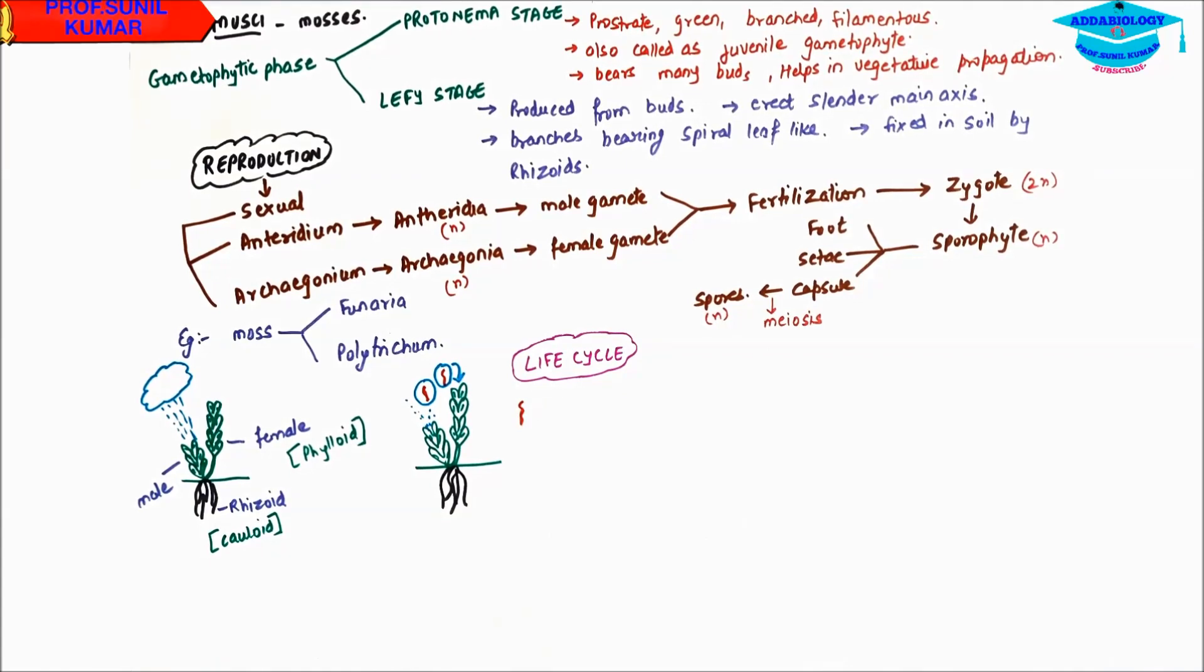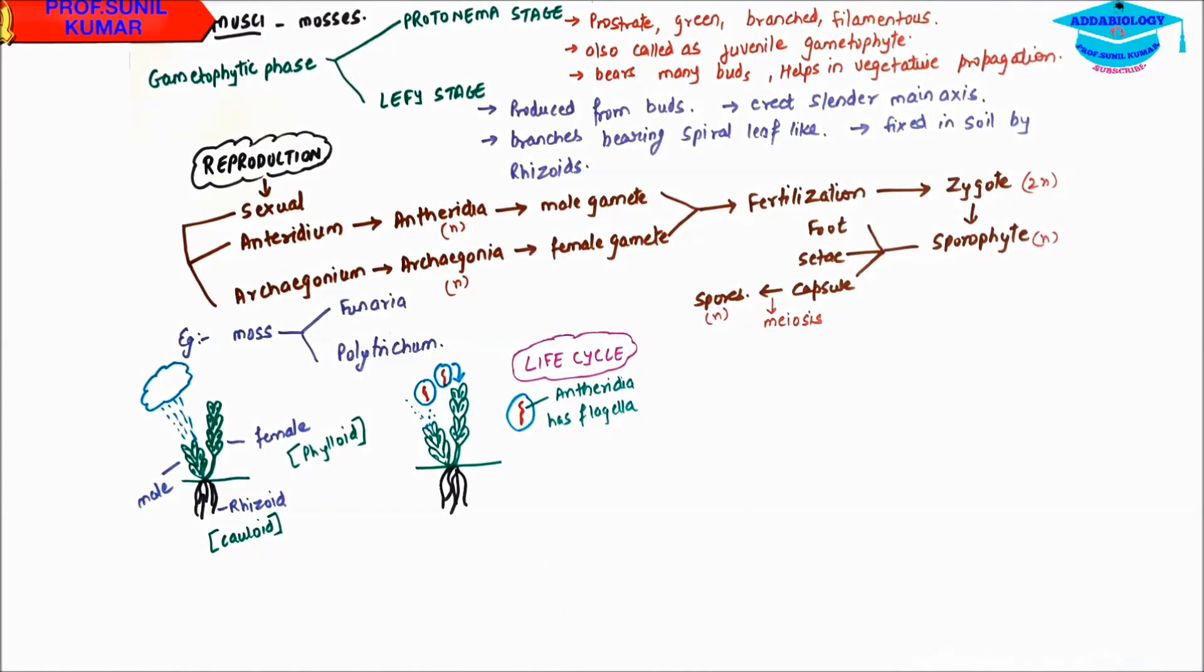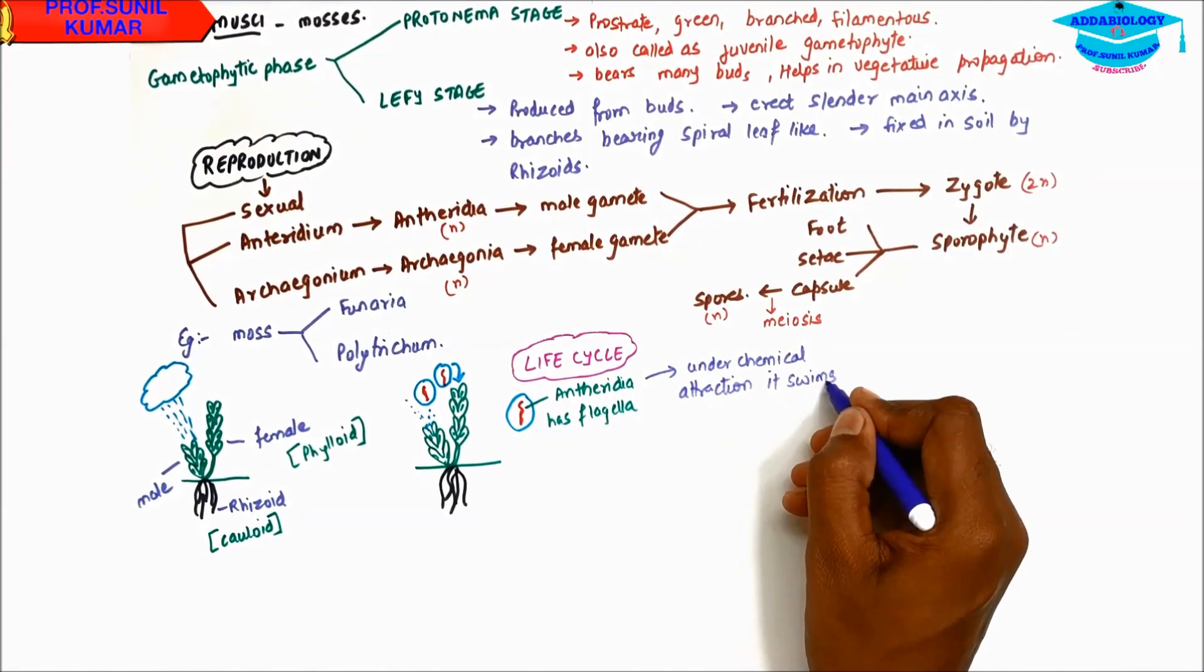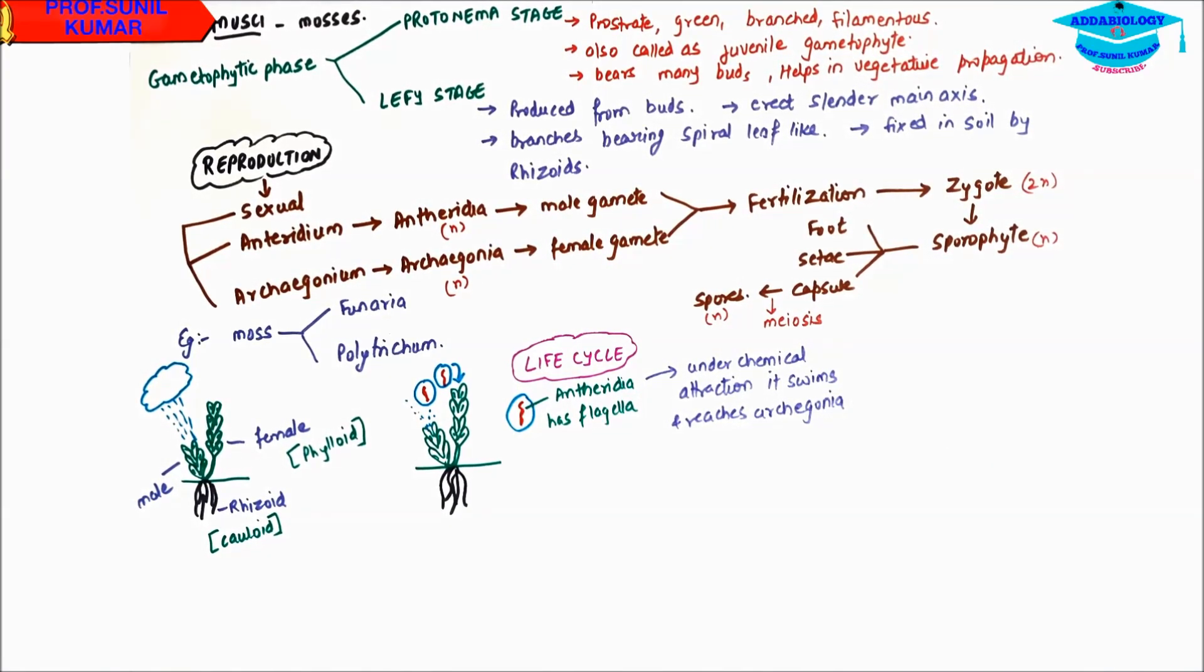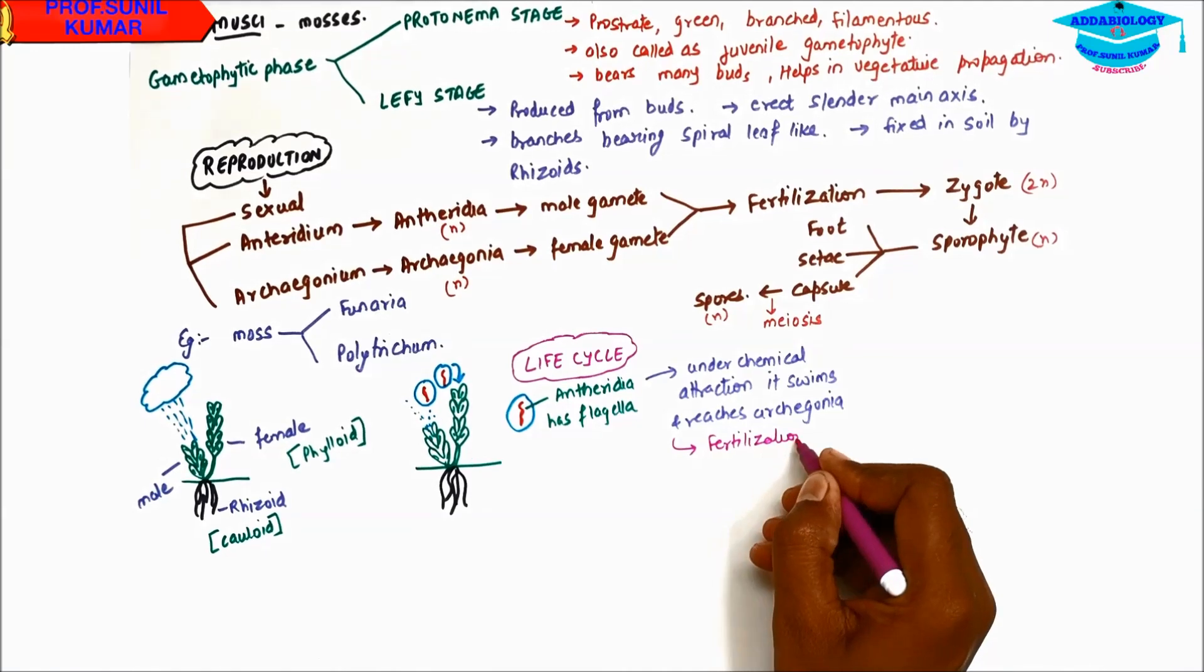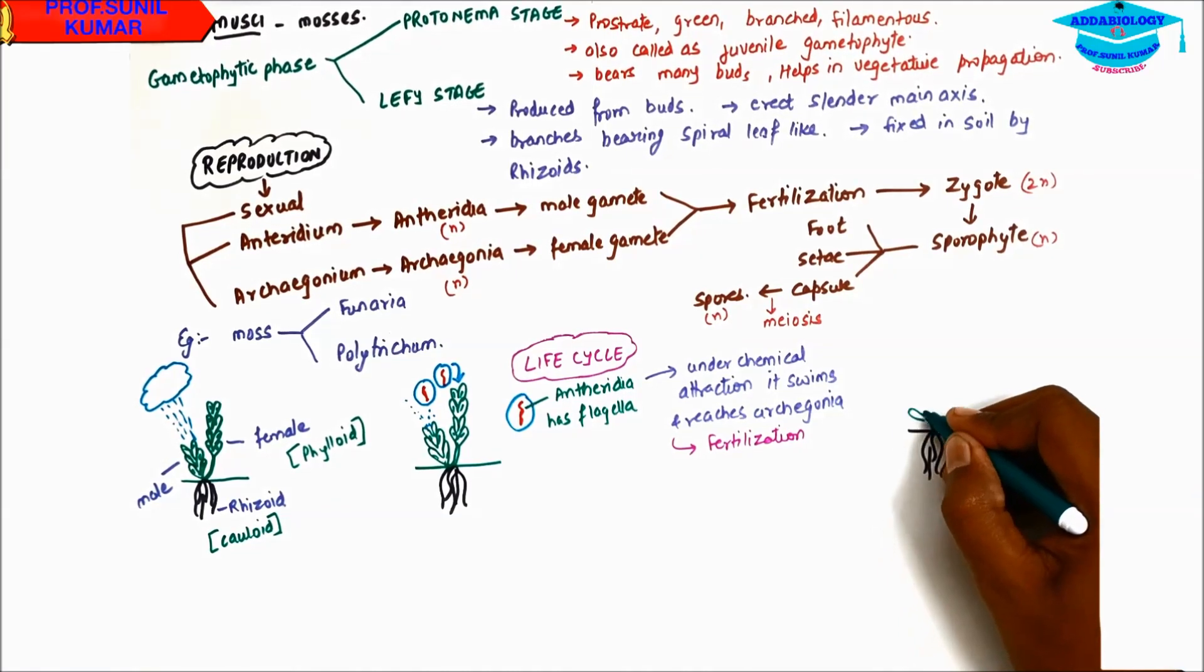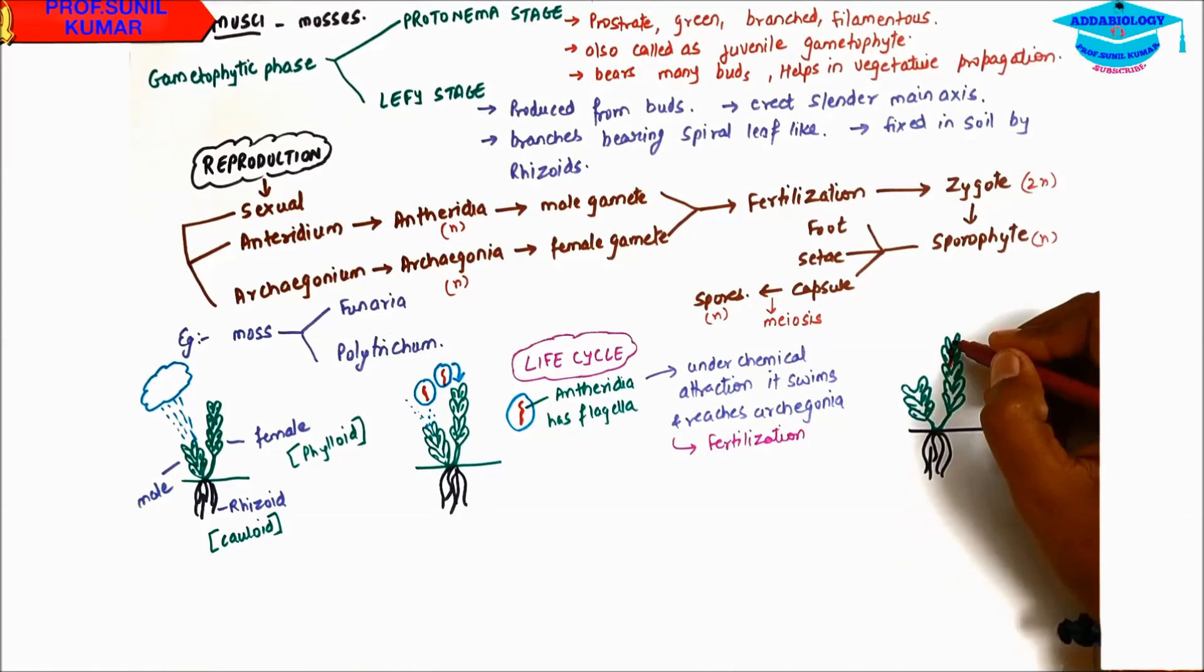The antherozoid is the male gamete. Now the antherozoid will be having flagella. That flagella will help the antherozoid to swim and reach to the female gametophyte under chemical attraction. Female gametophyte releases that chemical so as to attract the antherozoid. And when male gamete reaches, it results in the process of fertilization.